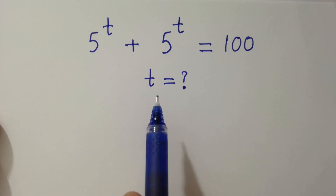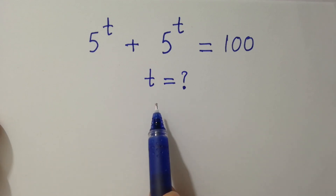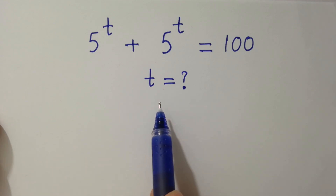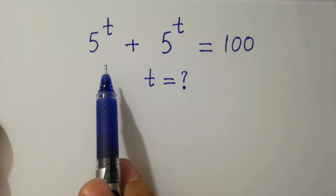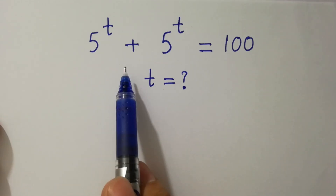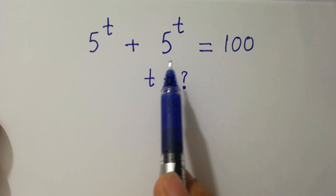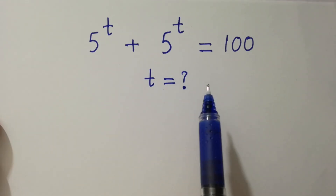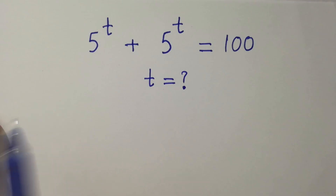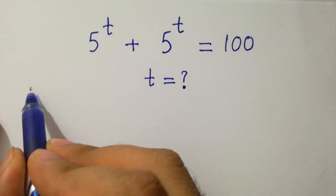Hello friends. Find the value of t if 5 to the power t plus 5 to the power t equals 100. Let's have a solution.